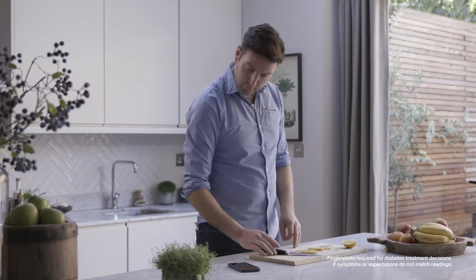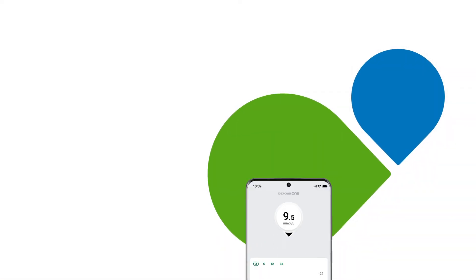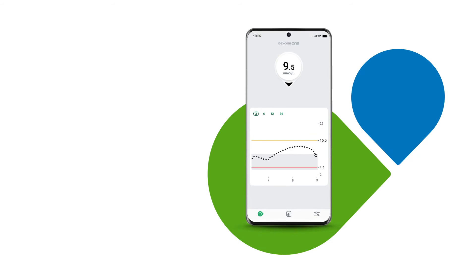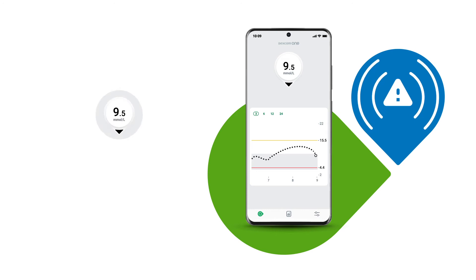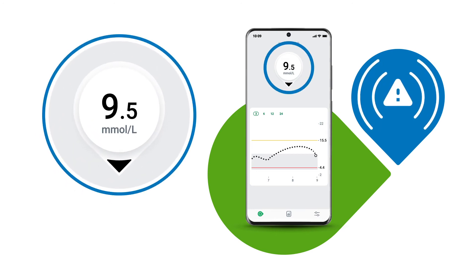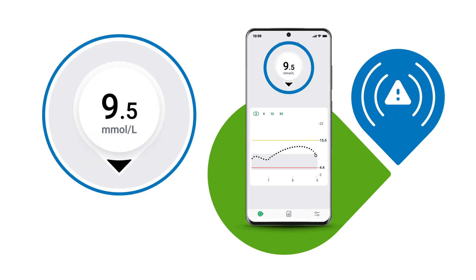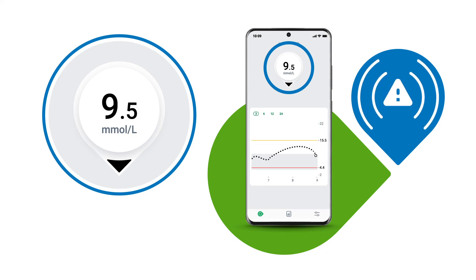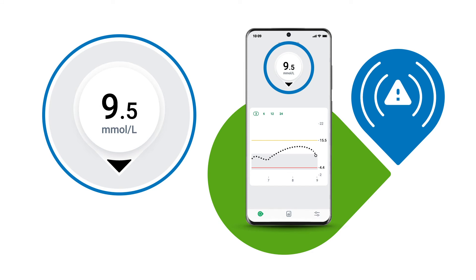Later that day, Oliver sits down for lunch. He looks at his number and arrow to decide how much insulin to dose. His glucose is 9.5 millimoles per litre and falling. A falling arrow means his glucose could decrease between 0.1 and 0.2 millimoles per litre each minute.